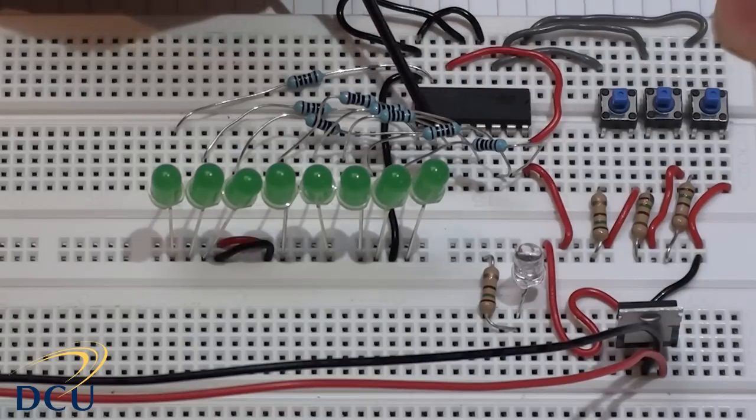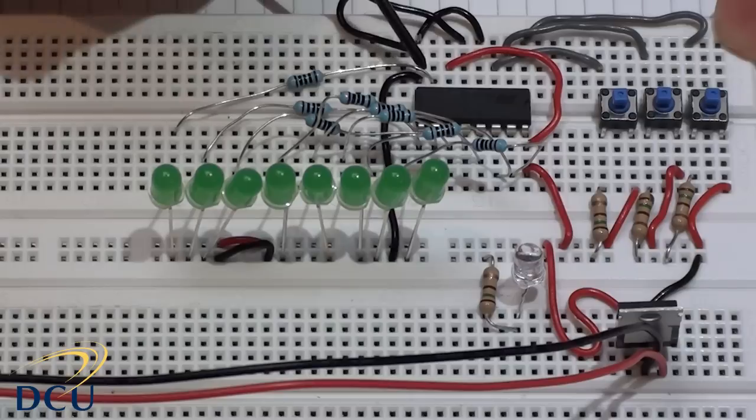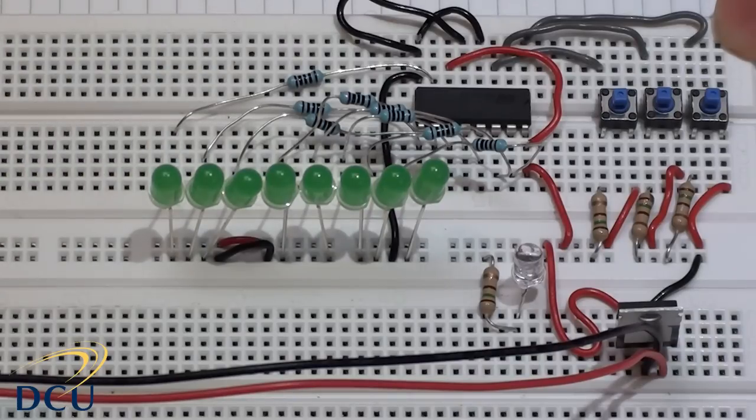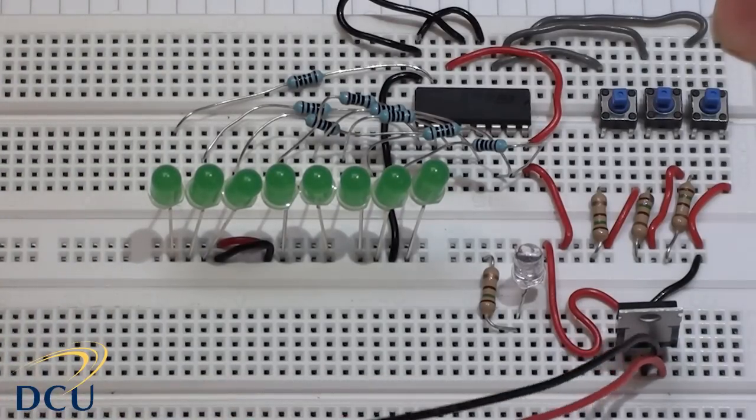These 7 pins over here are the first 7 outputs. And the final output is on pin 7 of the chip. This is connected to the last LED. So let's connect the power and see if it works.